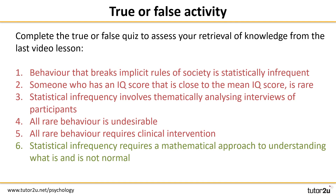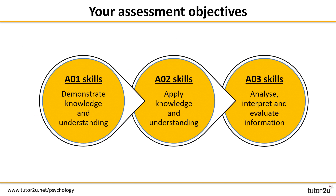Hopefully you've done okay with this activity and you're feeling confident with your AO1 knowledge about statistical infrequency. It's always worth reminding yourself about the three assessment objectives you need to develop throughout your course. AO1 skills are assessed on questions that ask you to outline or describe something. AO2 skills are where you apply your knowledge, and AO3 skills are where your critical thinking and analysis come into play. For AO1 you need to be able to write about statistical infrequency coherently, in addition to remembering the key facts.